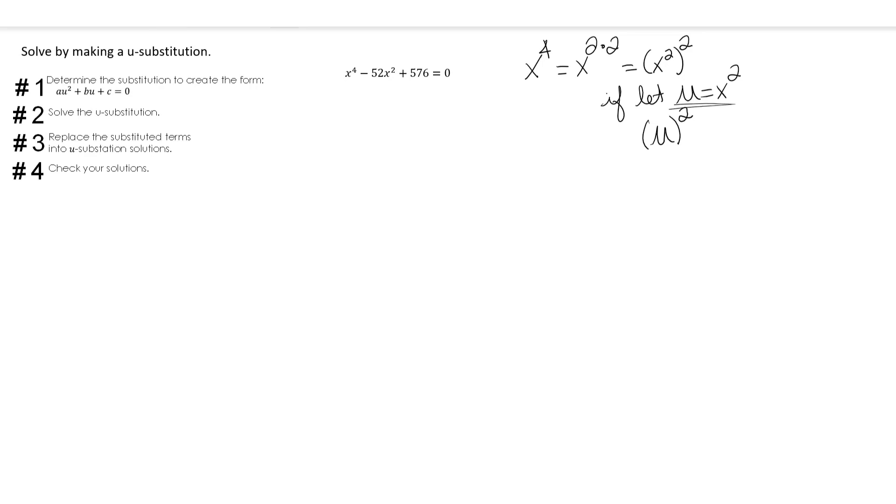So we're going to have u squared minus 52u, because remember u is x squared, plus 576 equals 0.